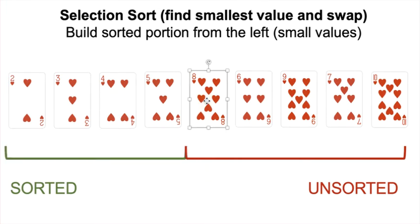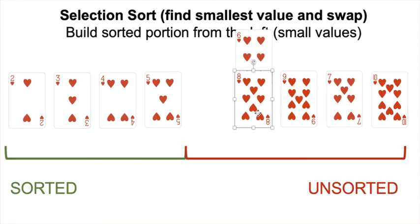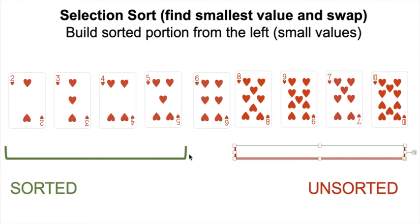Now 8 is our first element in the unsorted portion — assume it's the smallest. 6 smaller than 8? Yes. 9 smaller than 6? No. 7 smaller than 6? No. 10 smaller than 6? No. So 6 is our smallest element and we swap. This shrinks unsorted by 1 and grows sorted by 1.